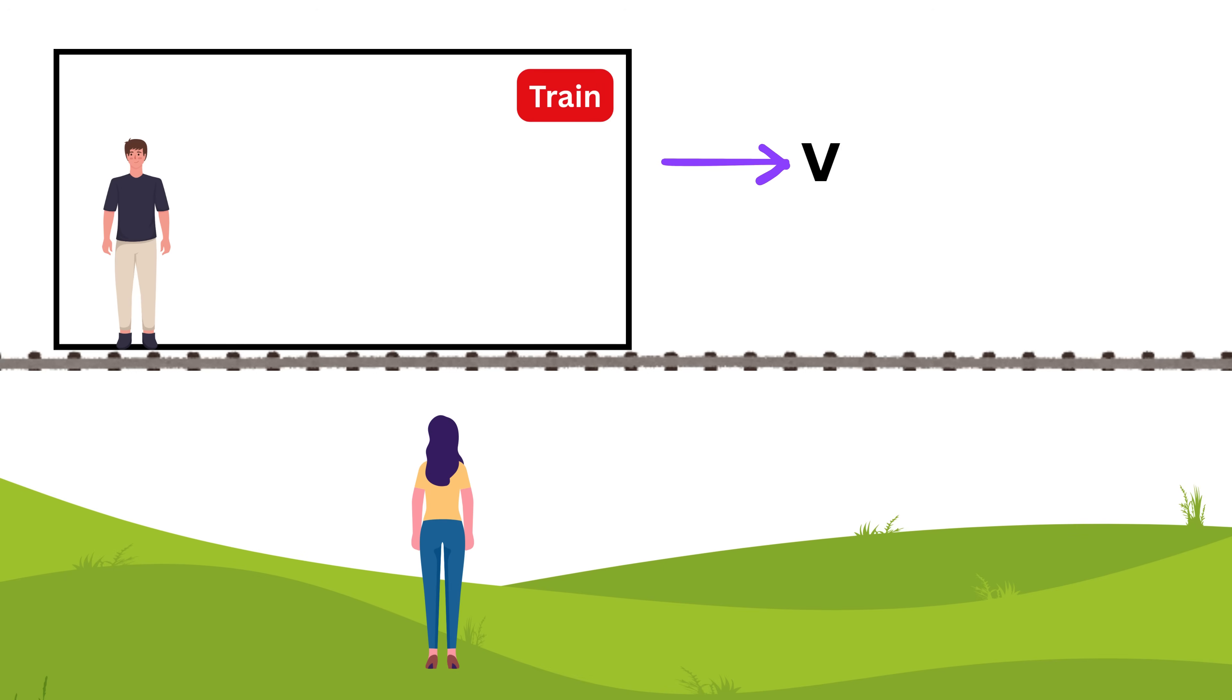Inside the train sits Bob. Now let's talk about how Alice and Bob might describe the same event. For example, Bob dropping a ball inside the moving train. Alice sees the event from the platform and Bob sees it from inside the train.